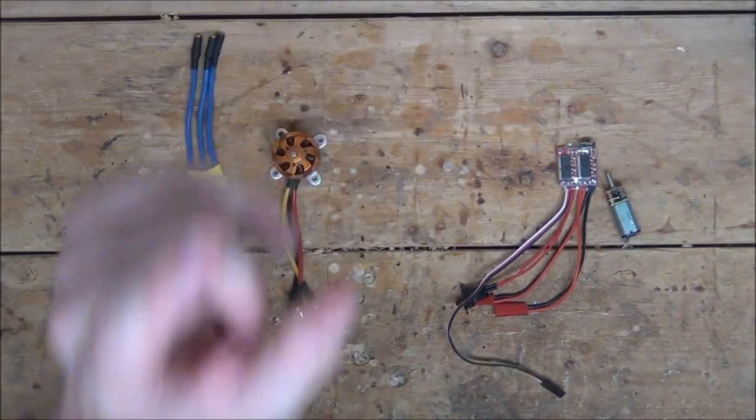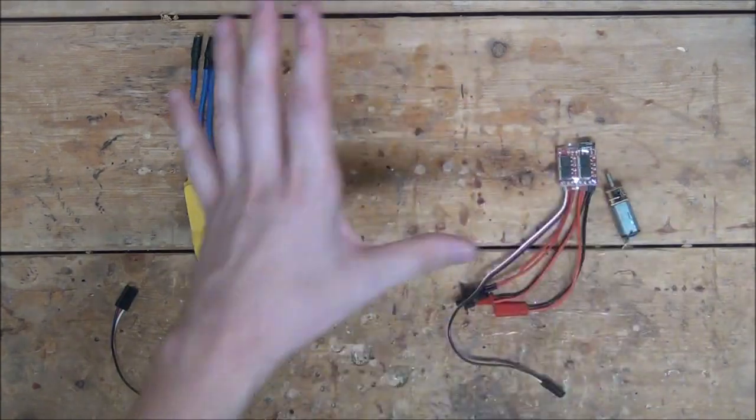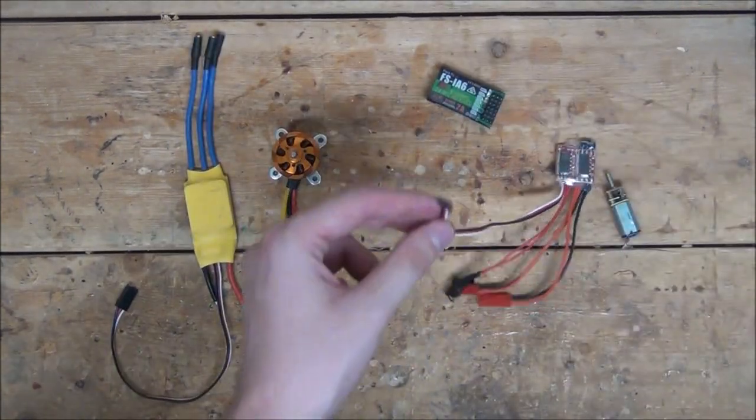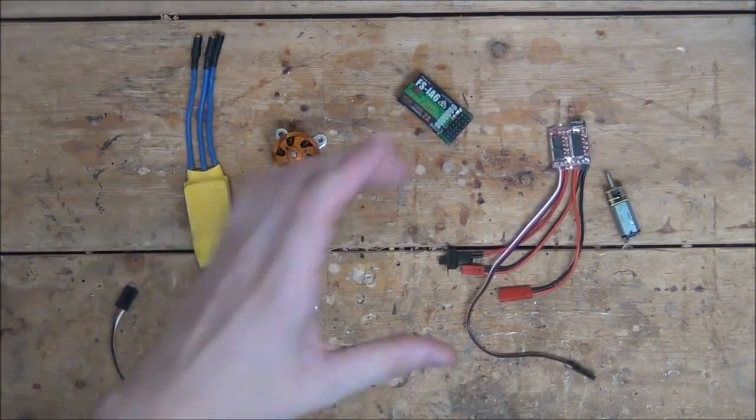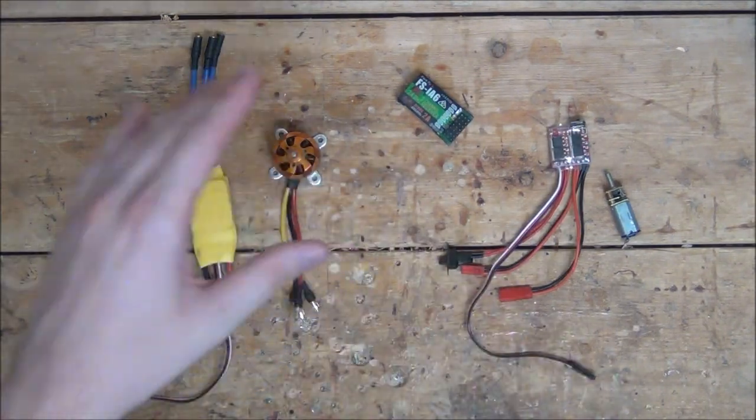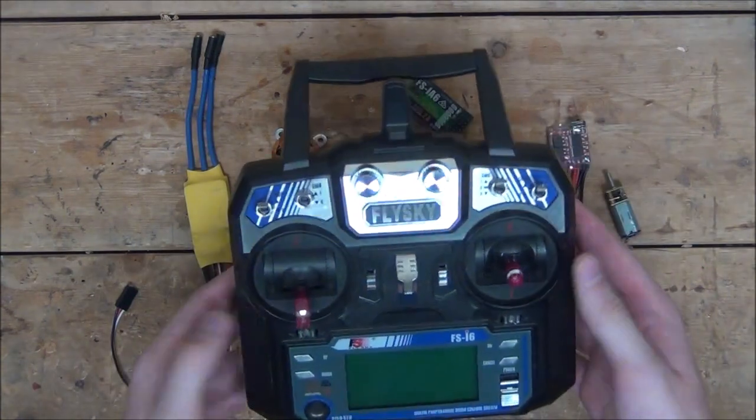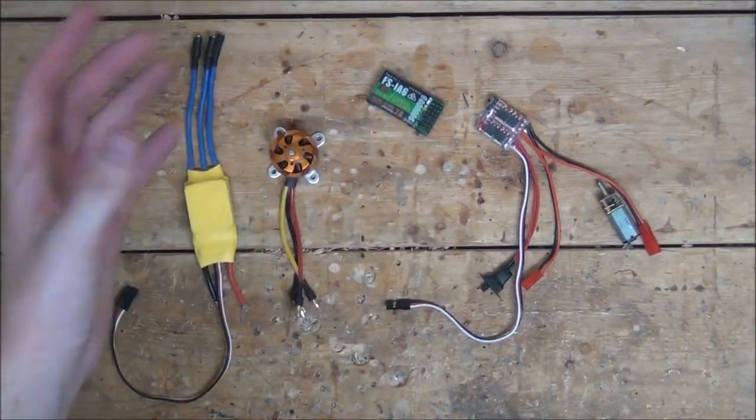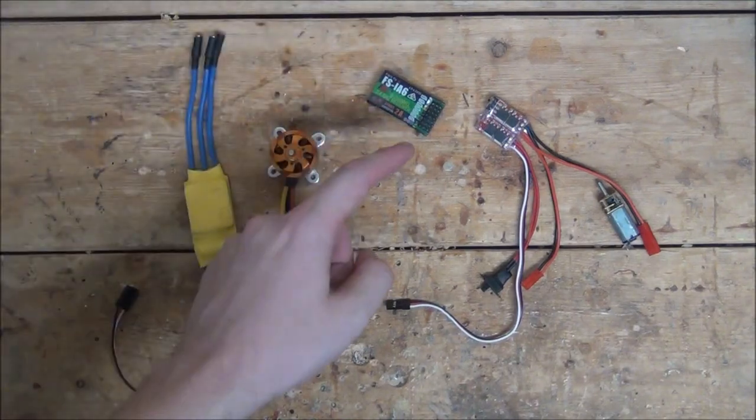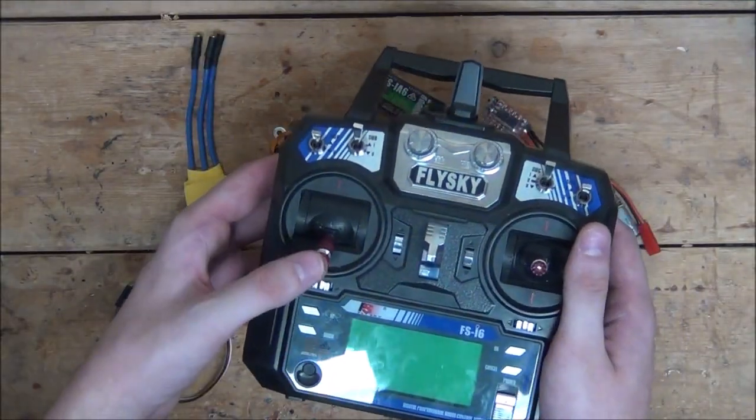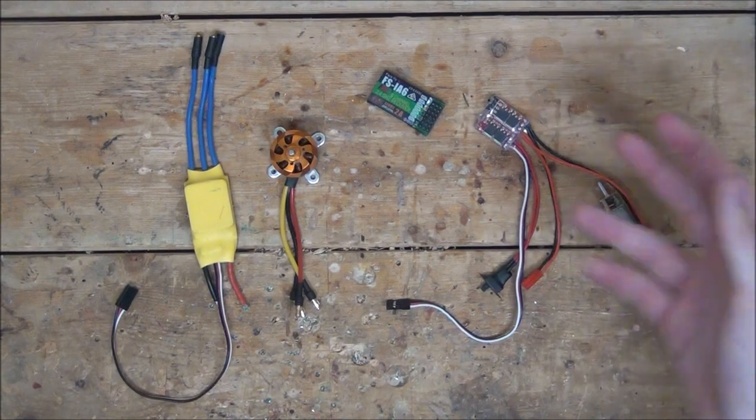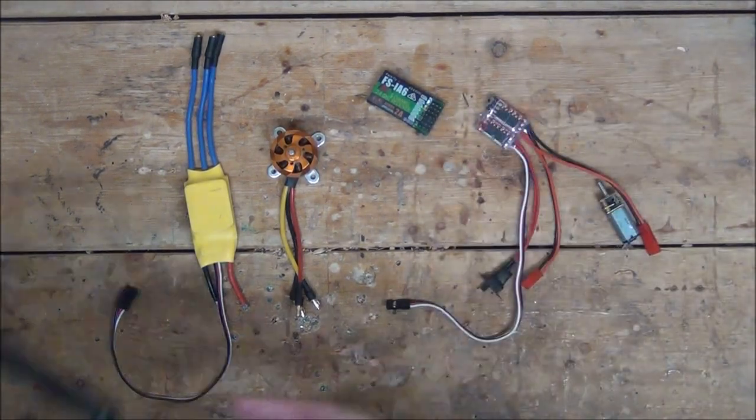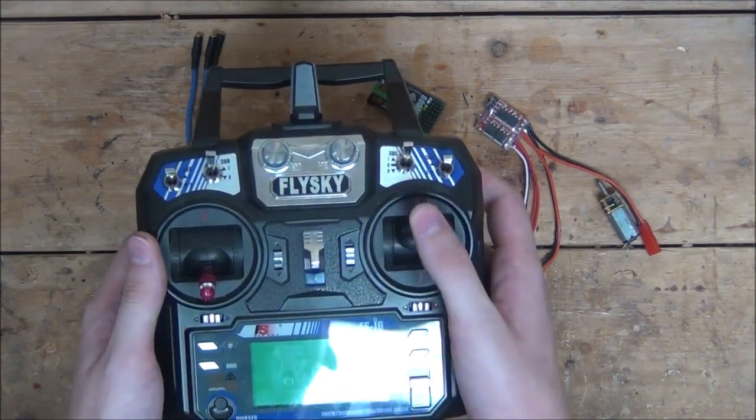Now, on to a question that a lot of you guys, and I mean a lot of you guys, have been asking. How do you know which channel on your receiver to plug your ESC into? And the answer to that question completely depends on how you want your robot to drive and how you have your transmitter set up. For me, I usually plug in my weapon motors, if that be a spinner or a lifter, into channel 3, which on my transmitter is controlled by the left joystick. Then, on my two drive ESCs, I usually plug them into channels 1 and 2, which on my transmitter is controlled by the right joystick.